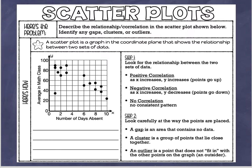The problem says: describe the relationship, or correlation, in the scatter plot shown below, and identify any gaps, clusters, or outliers. The first thing I want to look at is the definition in the star: a scatter plot is a graph in the coordinate plane that shows the relationship between two sets of data. A graph has an x value across the bottom and a y value going up the side.